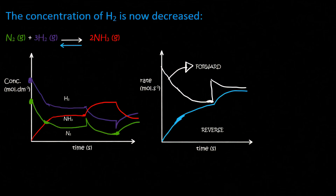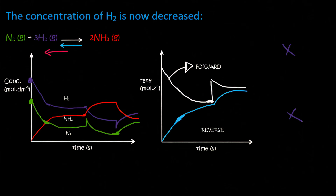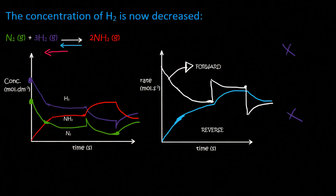Now we need to look at the rate graph — this is where it gets a bit interesting. We know that the total rate is going to decrease, because if you decrease concentration, pressure, or temperature, the overall rate is going to decrease. So we're going to end up somewhere lower than where we are at the moment. Both the forward and the reverse rate are going to slow down, but because the reverse reaction is being favoured, it will be a little bit faster than the forward reaction — so the forward reaction is going to slow down the most. We make it slow down drastically, then let it come up again, and the turquoise reverse reaction joins it. Our new equilibrium position is at a slower speed than the original.